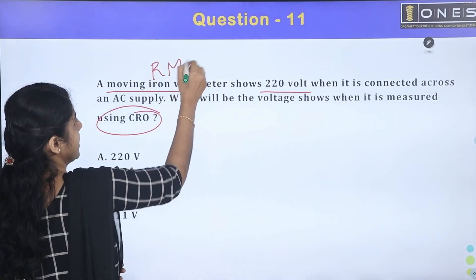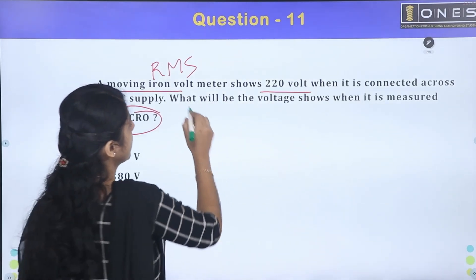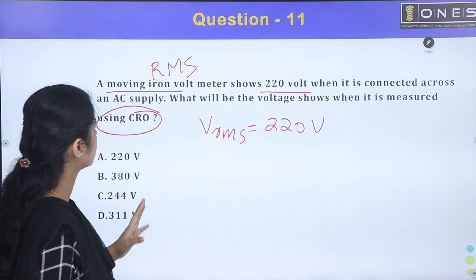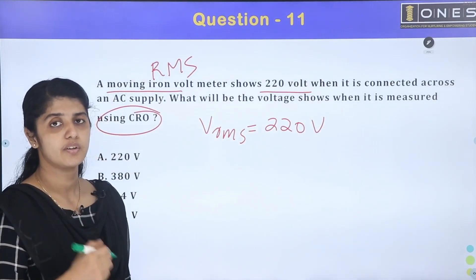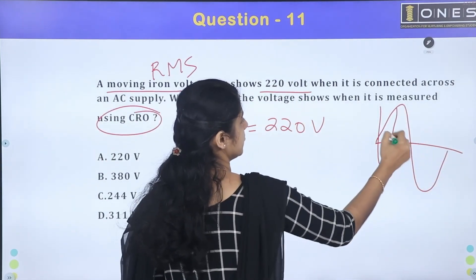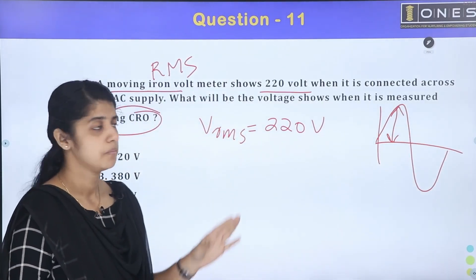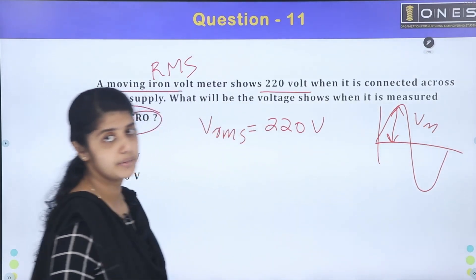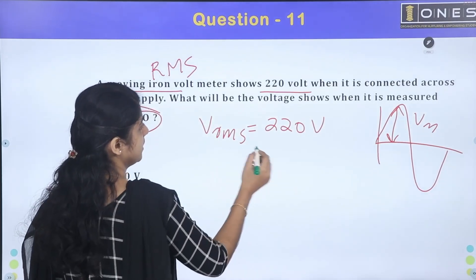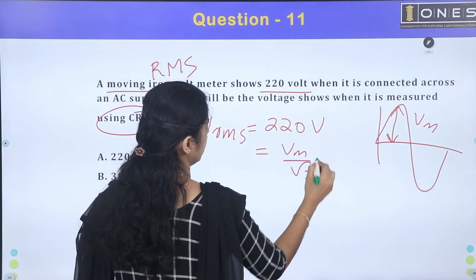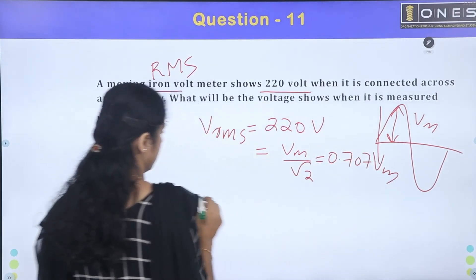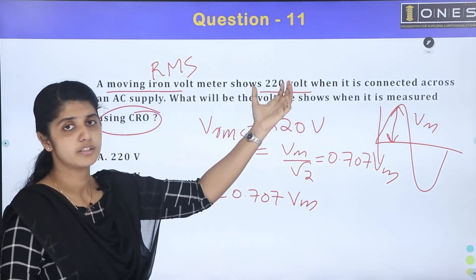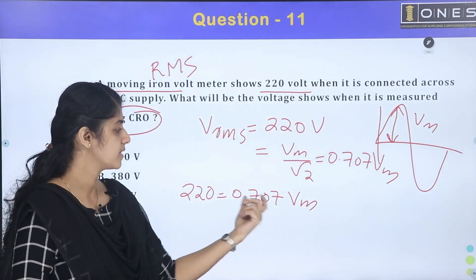The moving iron meter measures the RMS value of AC. The CRO measures the peak value. The RMS value is 0.707 times Vm, that is Vm divided by root 2.